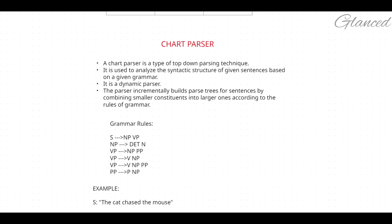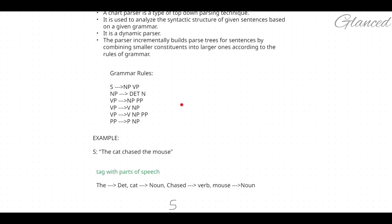These are the grammar rules we need to follow in the chart parser, and these grammar rules are the same for every sentence. A sentence can be partitioned into noun phrase and verb phrase. A noun phrase can be partitioned into determinant and noun. A verb phrase can be partitioned into noun phrase and prepositional phrase, or into verb and noun phrase, or verb, noun phrase, and prepositional phrase. A prepositional phrase can be divided into preposition and noun phrase.